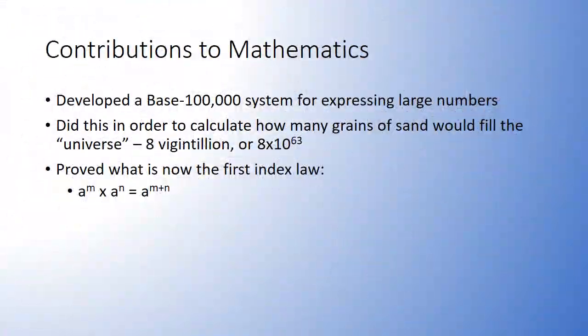Archimedes developed a base 100,000 system for expressing large numbers. He did this to calculate how many grains of sand would fill what he estimated was the universe. He also proved the first index law.